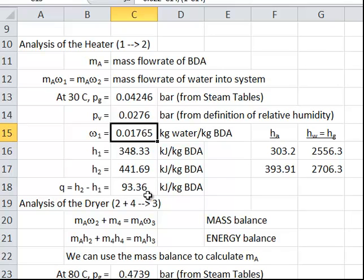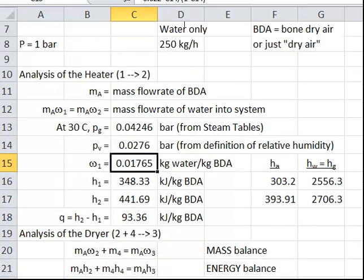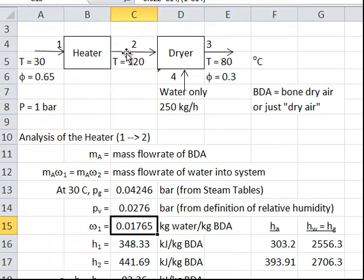Of course, I can't really tell you how much heat transfer is required until I know the mass of dry air. So let's analyze the dryer. Now the dryer had moist air coming in, just plain water coming in, and moist air coming out.